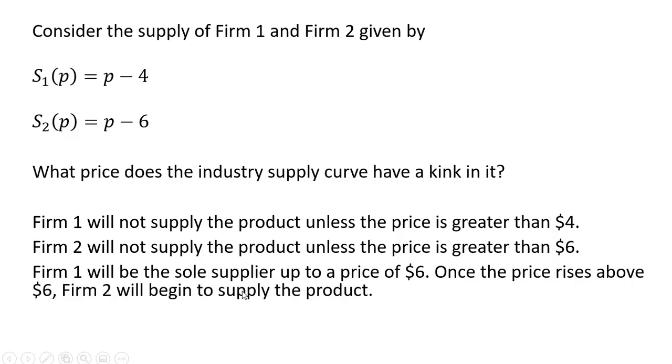Firm 1 will be the sole supplier up to a price of $6. Once the price rises above $6, Firm 2 will begin to supply the product. Therefore, the kink in the industry supply curve occurs at a price of $6.